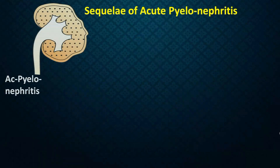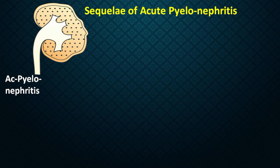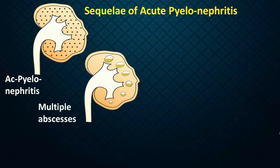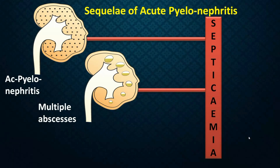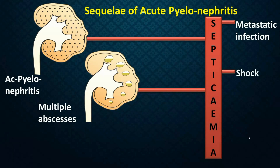If you have generalized or global pyelonephritis, where most of the kidney parenchyma is involved, it's called acute pyelonephritis. This can go from a non-suppurative state to a suppurative state, and you can get small micro-foci of abscess formation in the kidney. Multiple small abscesses can form, and when this stage comes, the patient is going into a state of septicemia. Bacteria and their toxins will enter blood circulation. From circulating bacteria in the blood, one can get metastatic infection into various parts of the body — brain, meninges, lungs, and so on. More commonly, the patient goes into a state of septicemic shock, and sometimes the patient dies.